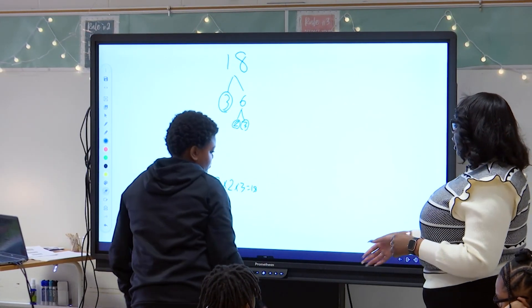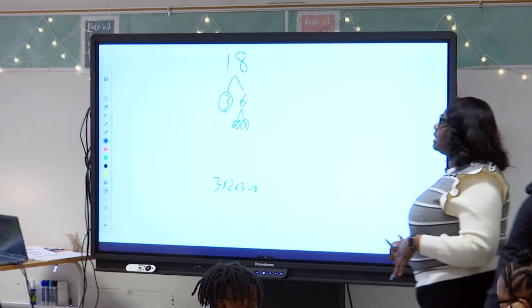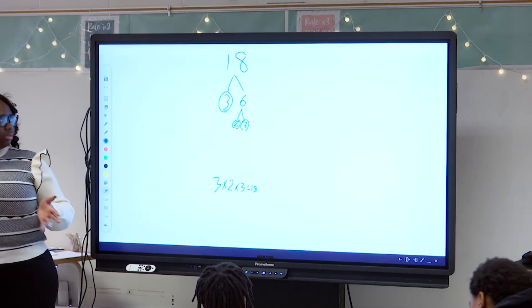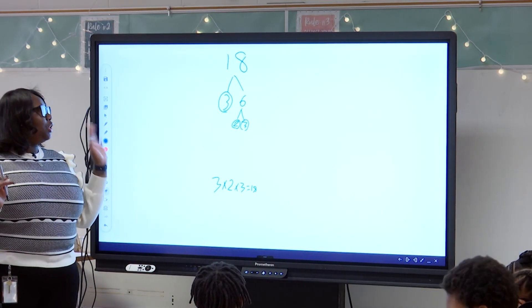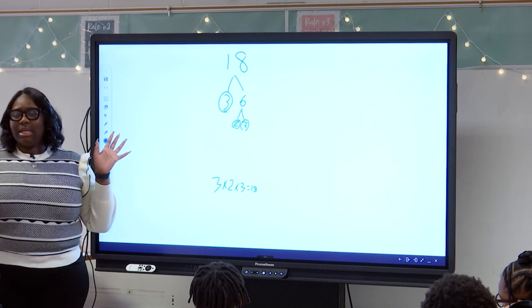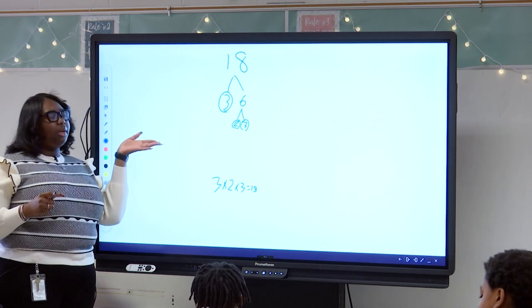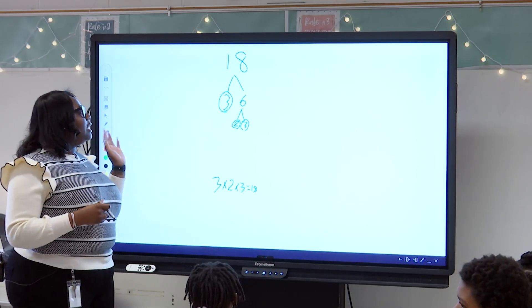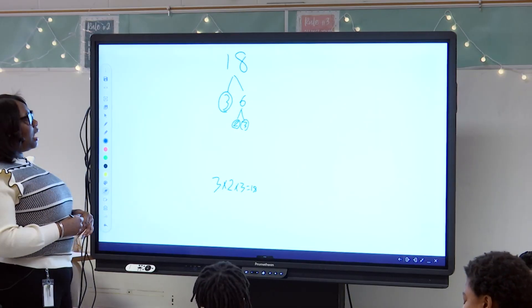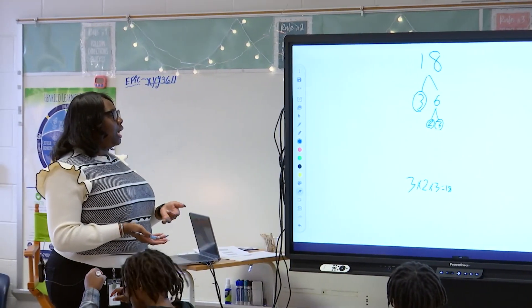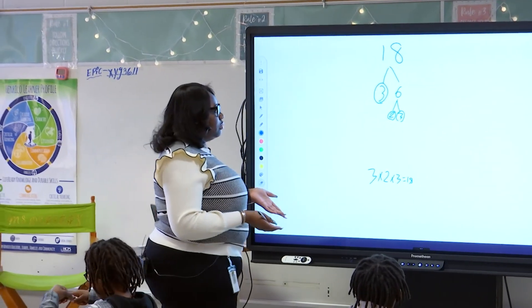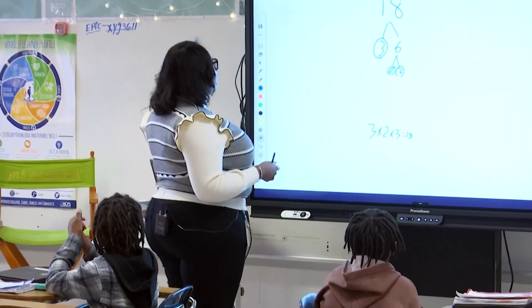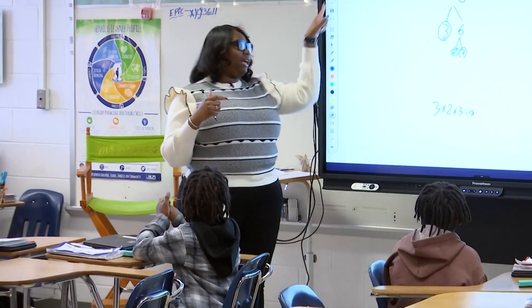Alright, so what Kaysen did was he said that three times six is eighteen. Can three be broken down anymore? No — so we circle it. Can six be broken down again? Yes — into two times three. Can two be broken down anymore? No. Can three be broken down anymore? No. So we circle both.